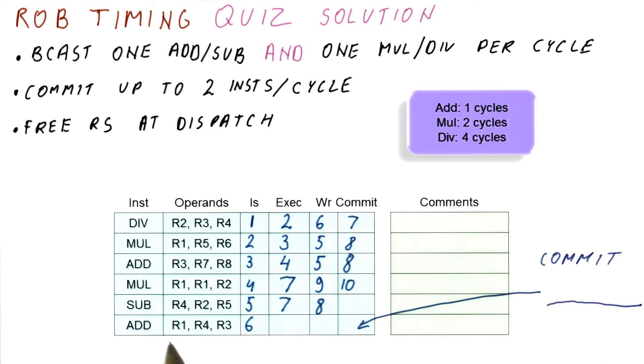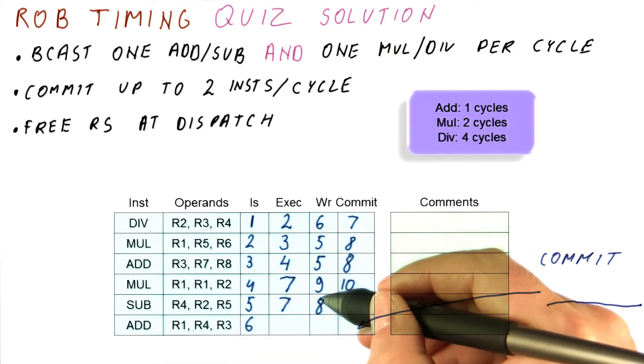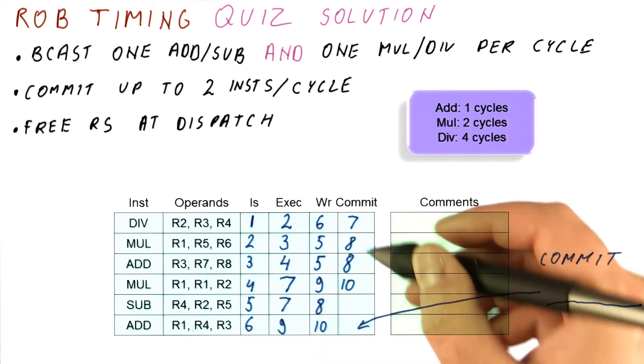And finally, for the add here, it's waiting for R4 and R3. R4 is produced by this subtract, R3 is produced here. So we need to wait for cycles five and eight, and then begin in cycle nine. We will try to broadcast in cycle 10. And now the question is, when do they commit?